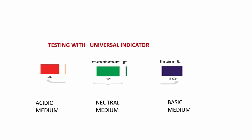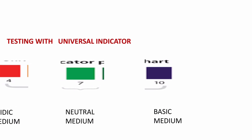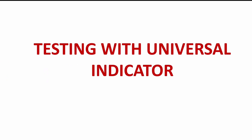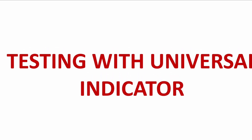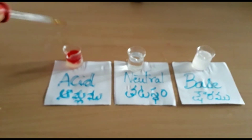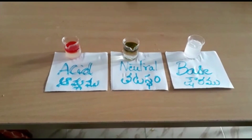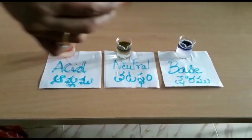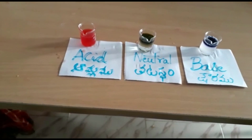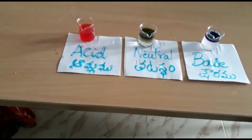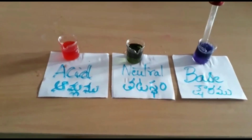What is the color of the pH paper or universal indicator? In acidic medium it is red, in neutral medium it is green, and in basic medium it is blue. You can observe: acid solution is red, neutral solution is green, and basic medium is blue.